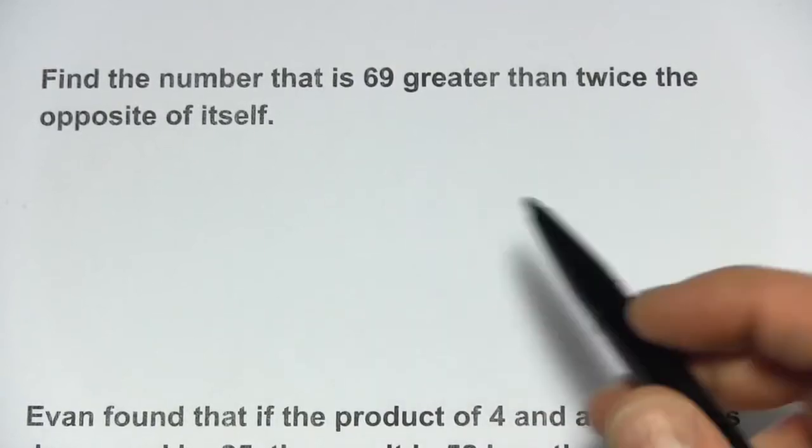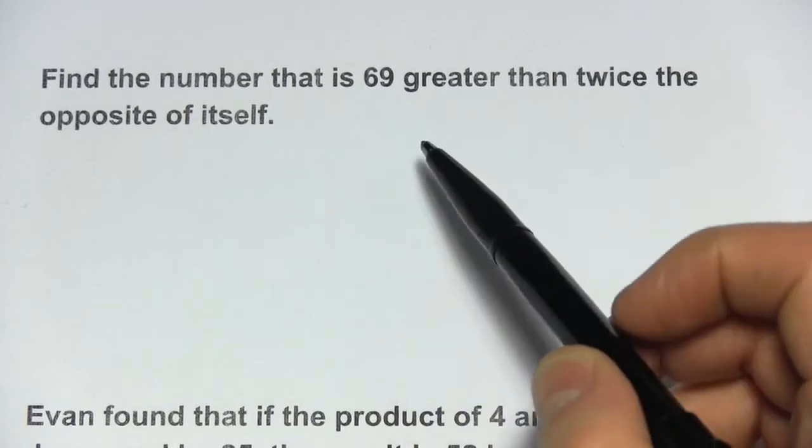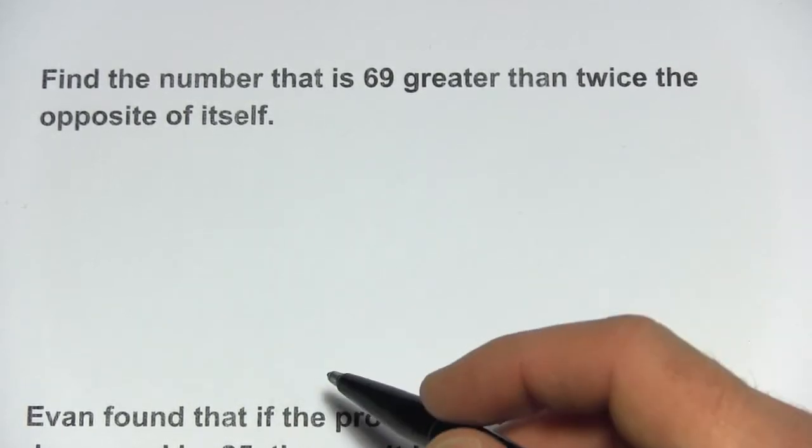Here we have some word problems that are about unequal quantities. This first one says find the number that is 69 greater than twice the opposite of itself.